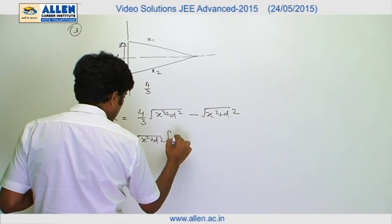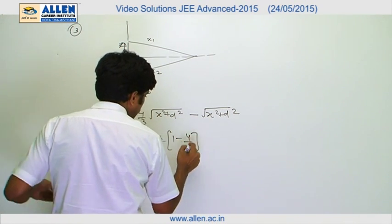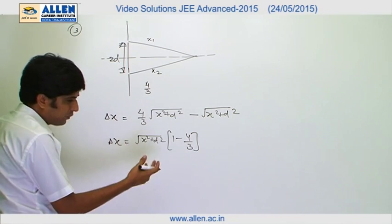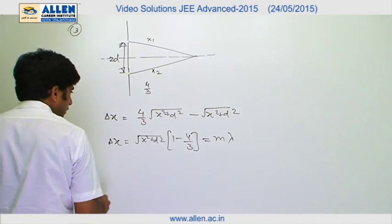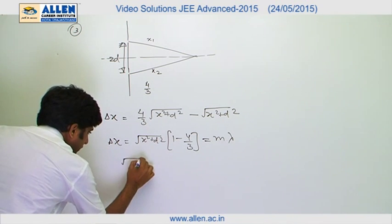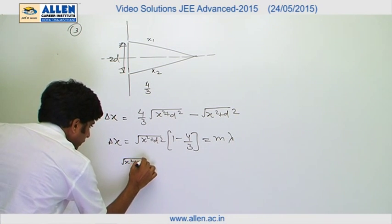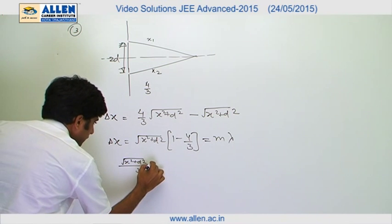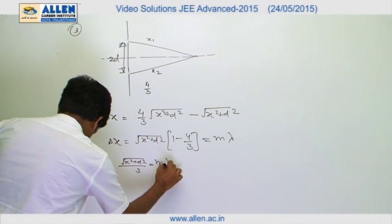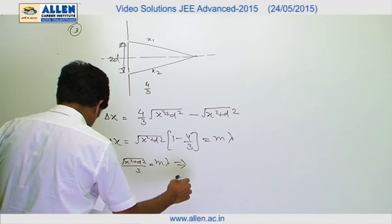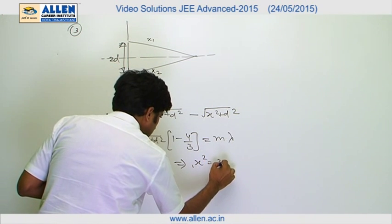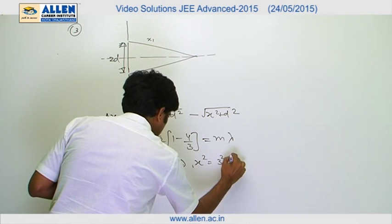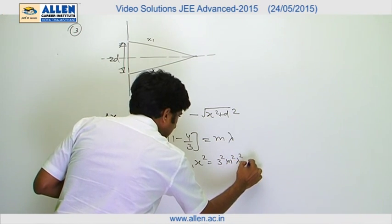And for maxima it must be equal to say m lambda. Therefore, we can say root x square plus d square upon 3 must be equal to m lambda. And from here we can say that x square equals to 3 square m square lambda square minus d square.